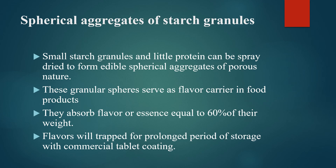Spherical aggregates of starch granules are formed when small starch granules and a little protein are spray-dried to form edible spherical aggregates of porous granules. These granules are good flavor absorbers — we call them flavor carriers. Flavor will be trapped for prolonged periods of storage with commercial tablet coating. These starches are also known as flavored starches.